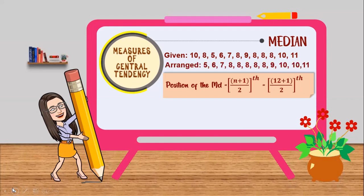And that is equal to 12 plus 1 over 2. Why 12? Because we have 12 number of values. Simplified, 13 over 2 or 13 divided by 2, and that is equal to 6.5.